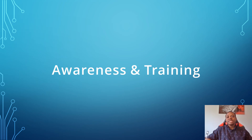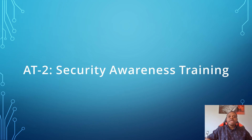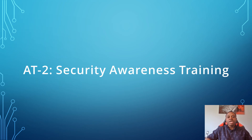We'll be looking at some of the controls that fall under the awareness and training control family. AT2 is security awareness training. AT2 focuses on ensuring that the organization provides basic security awareness training to information system users, including managers, senior executives, and contractors. It is used as part of the initial training for new users, when required by information system changes, and annually thereafter.